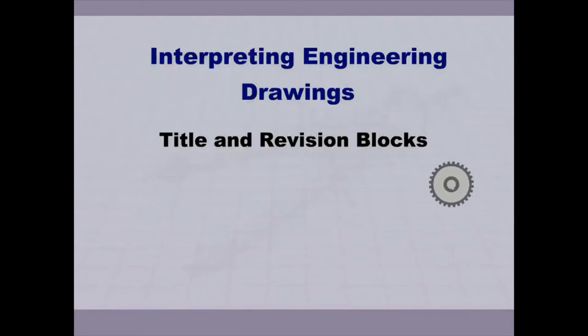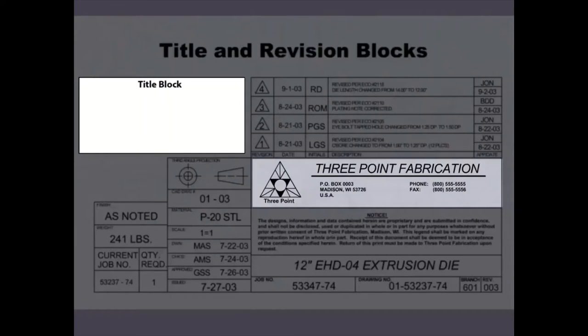Interpreting Engineering Drawings: Title and Revision Blocks. The name, address, and logo of the company are usually located in the upper area of the title block.